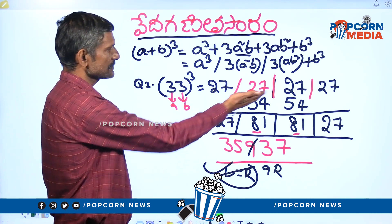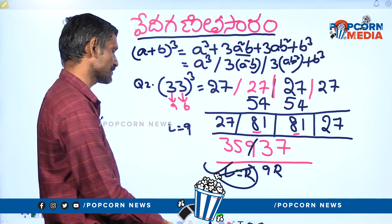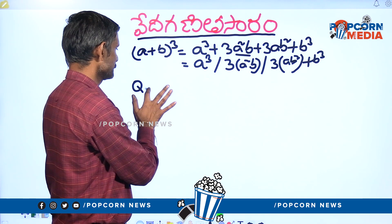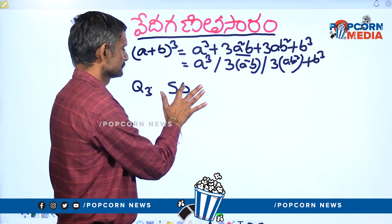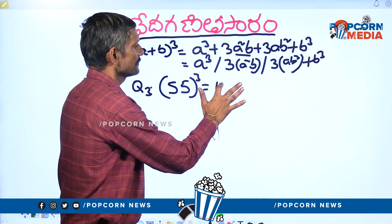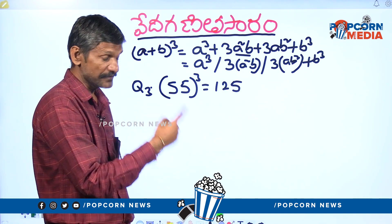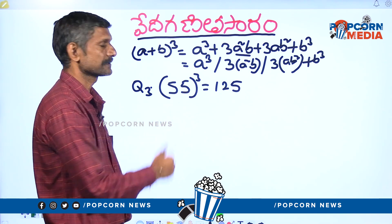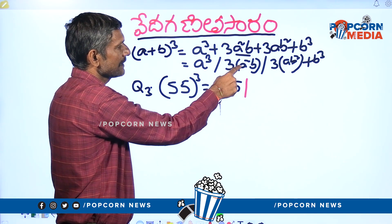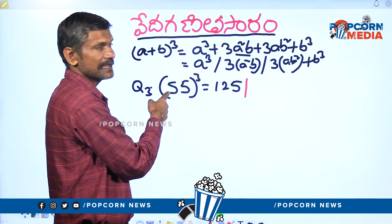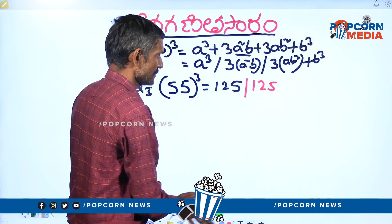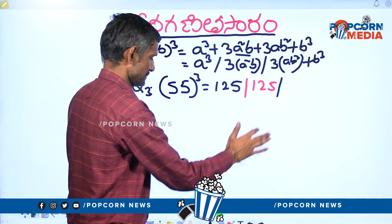Last and final problem. It is simple. Question number 3: 55 whole cube. A keep is 5. 5 times 5 is 25, 25 times 5 is 125. A cube is 125. Next, A squared B: 5 squared is 25, 25 times 5 is 125. This is the trick — 125.